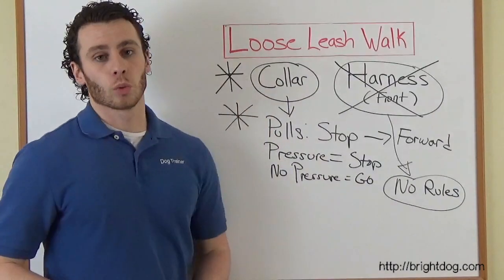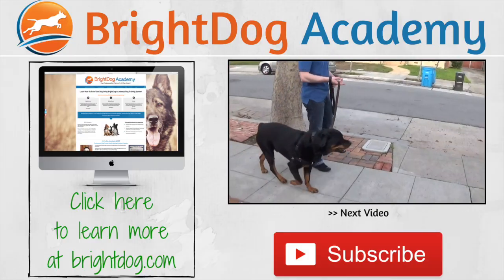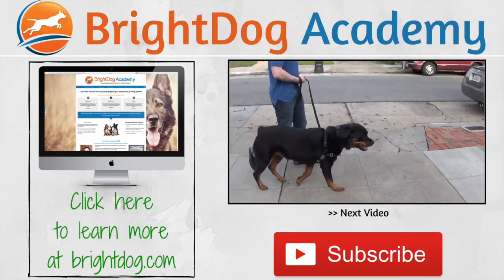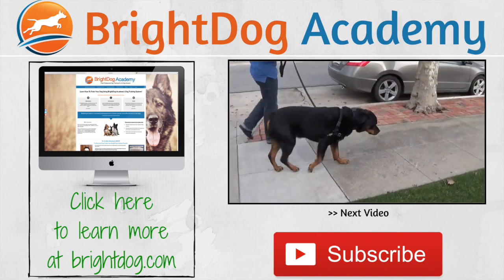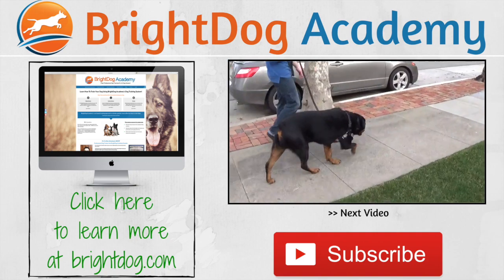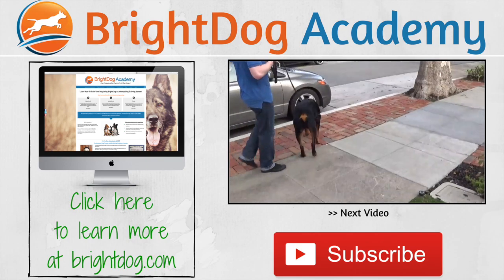So that is loose leash walking. If the leash gets too tight and he starts to pull, I just stop walking. And otherwise, he can pretty much do whatever he wants as long as he's not pulling. Oh wait. Go ahead.